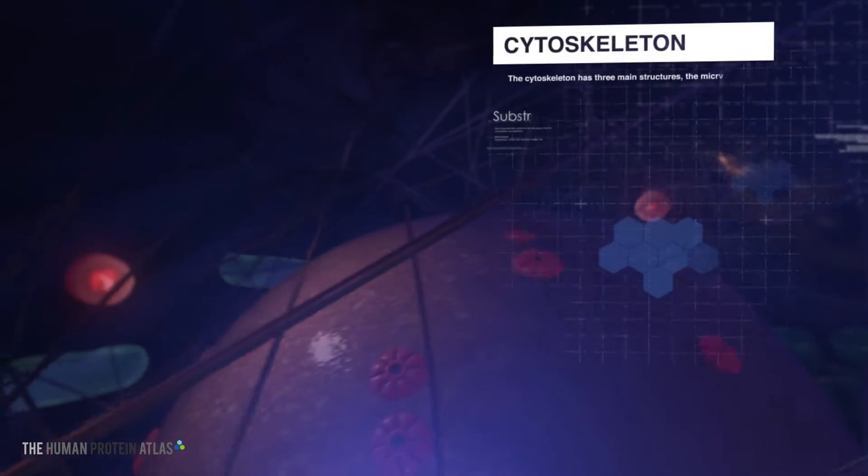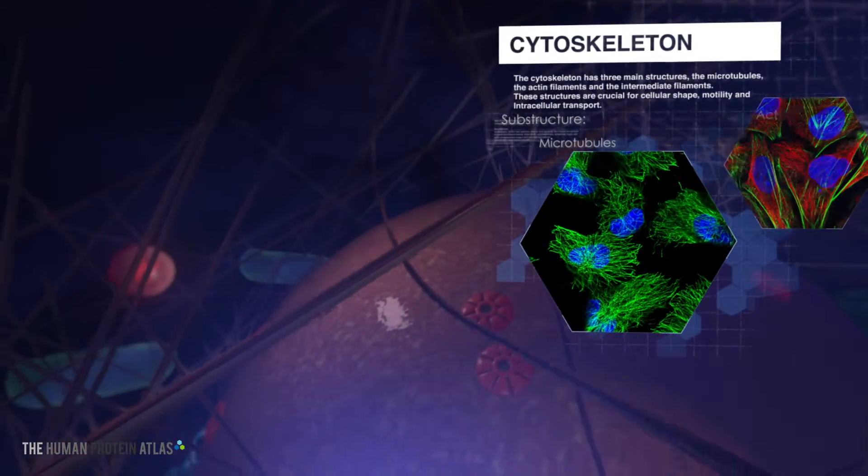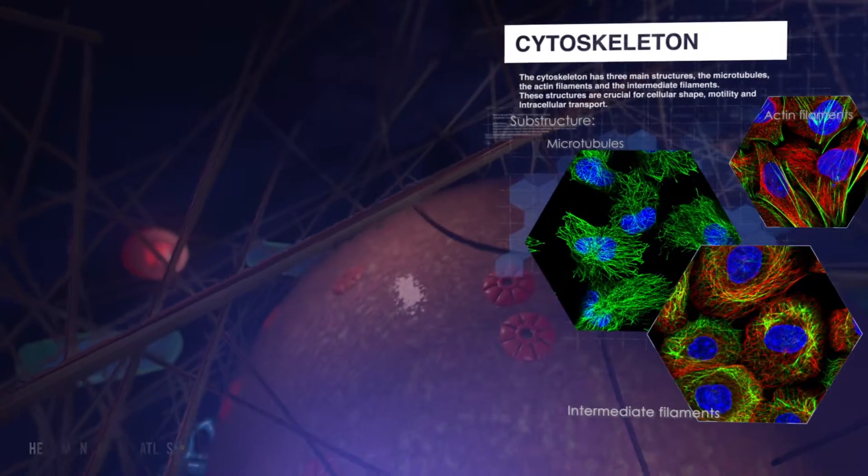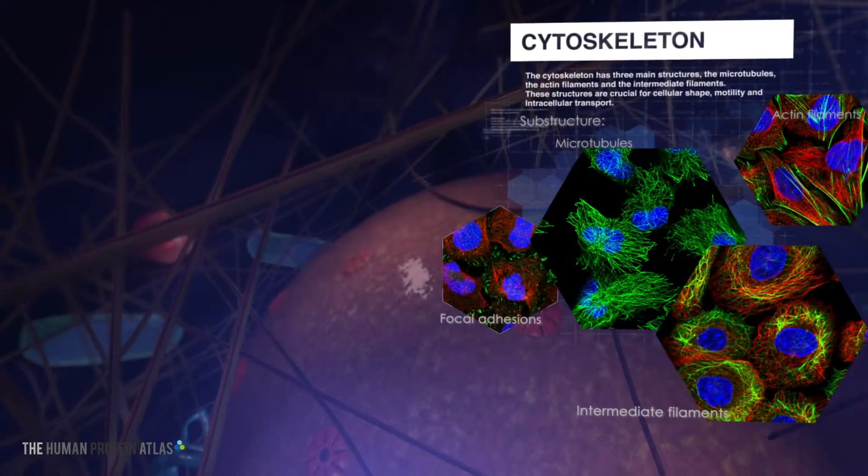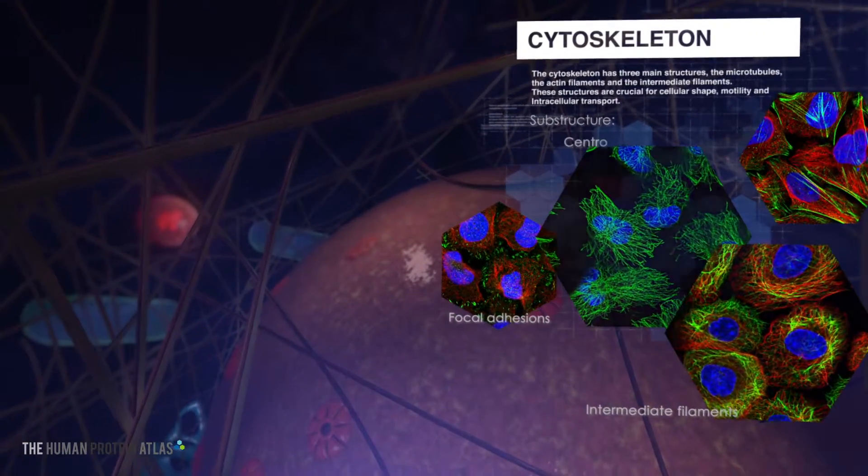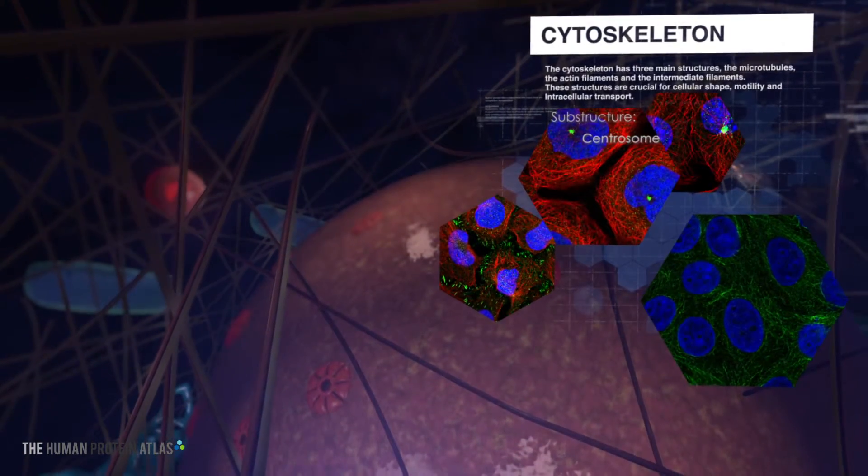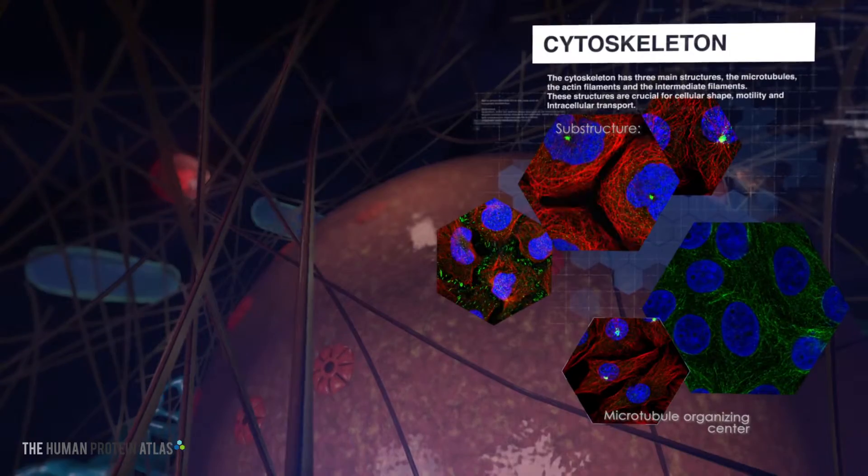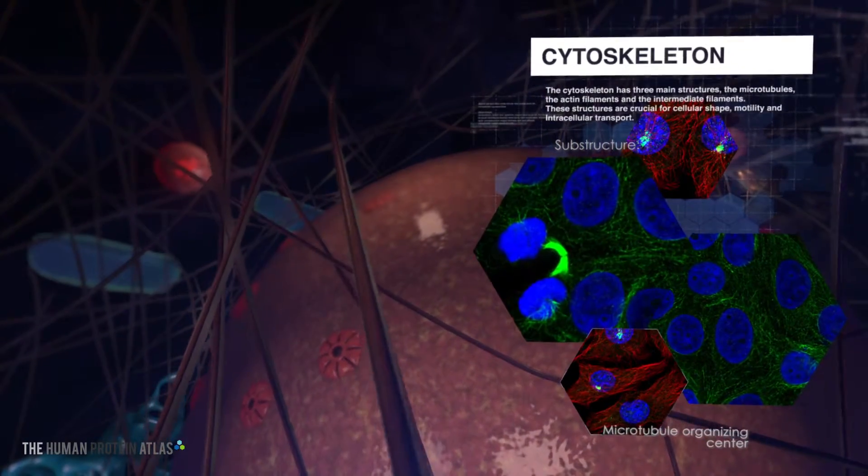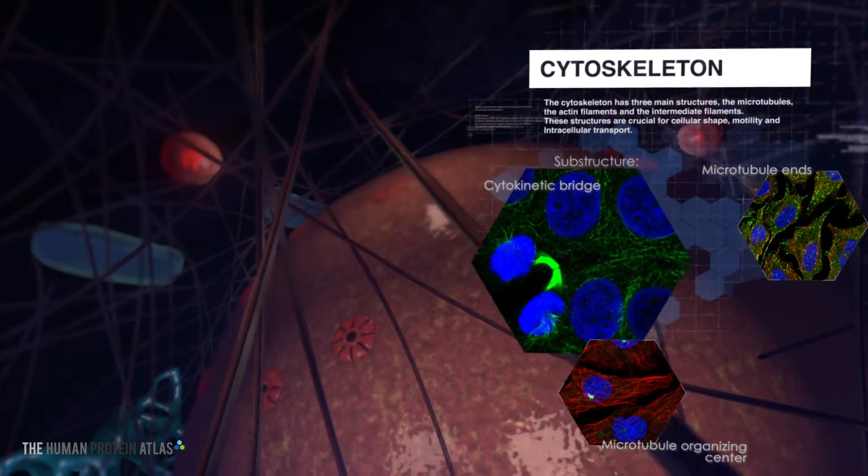There are three types of cytoskeletons in the cell: microtubules, actin filaments, and intermediate filaments. These structures are crucial for maintaining cellular structure and architecture. In addition to providing stability to the cell, the cytoskeletons also act as a transport network for organelles.